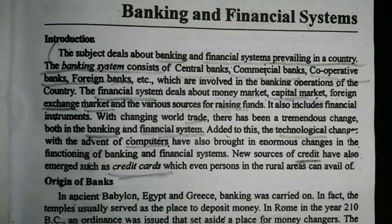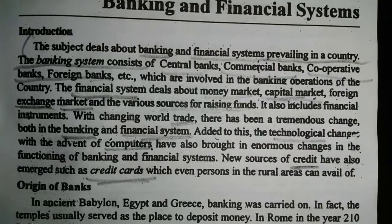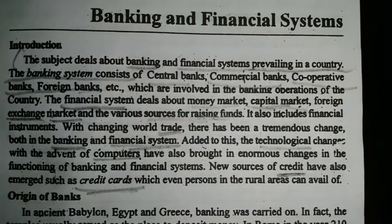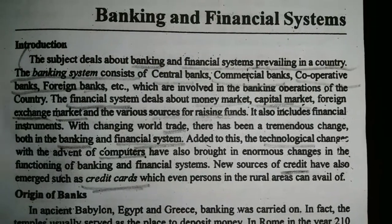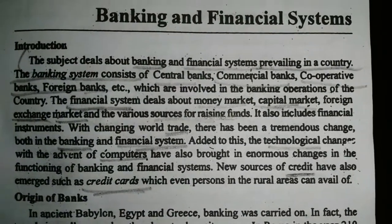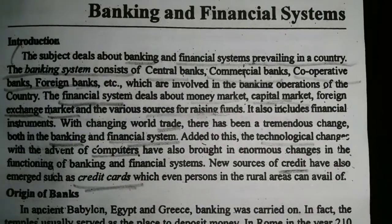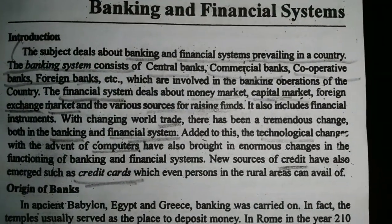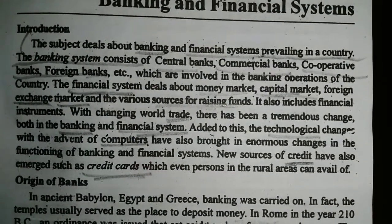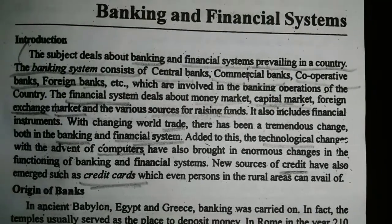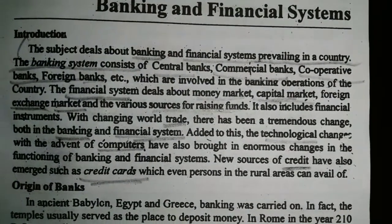If you see the introductory part, it is divided into two groups: banking and financial system. The banking and financial system prevailing in a country — the banking system consists of the central bank, commercial banks, cooperative banks, foreign banks, etc., which are involved in the banking operations of the country.